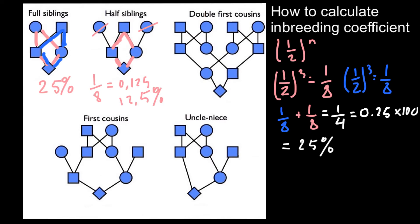With three nodes in the pathway, the calculation is once again (1/2)^3 = 1/8, which as a decimal is 0.125, or 12.5% — the inbreeding coefficient for this pedigree. You also have to understand that the inbreeding coefficient is not the same as what percentage of genes this child shares with his parents. Here the child would share 75% of the genes with his parents, but the inbreeding coefficient is 25%.